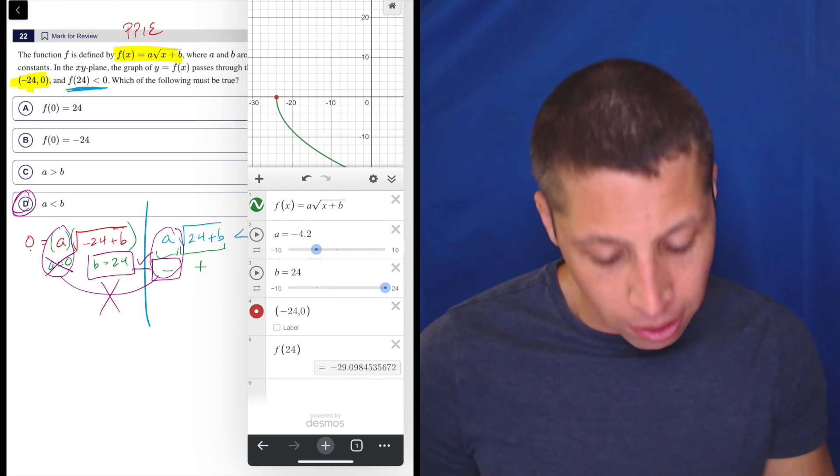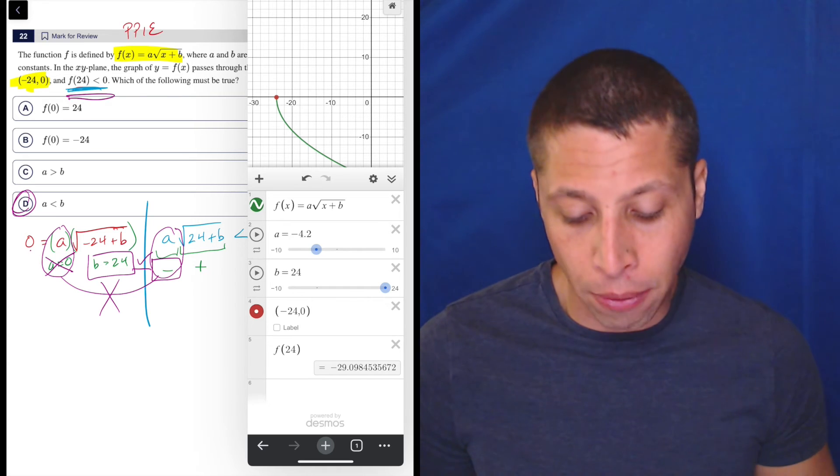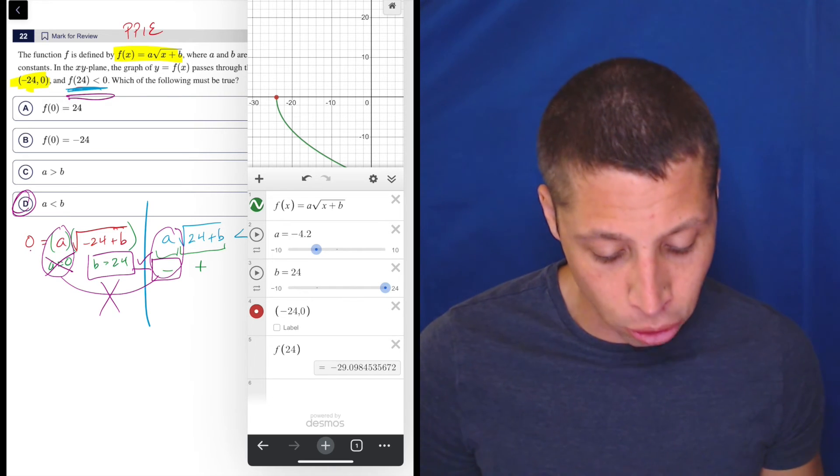And then if I look at F of 24 in line 5 there, well, that's a negative number, which also is what I needed. F of 24 has to be less than 0. So, that's true.